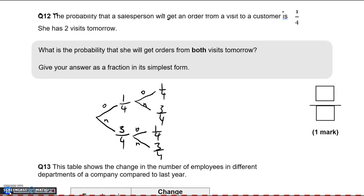We're looking for the probability that you will get orders from both visits. So that is this route: order and then order again. So 1 quarter times 1 quarter, which equals 1/16.